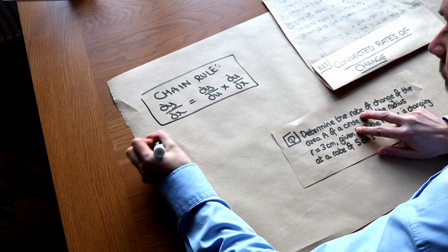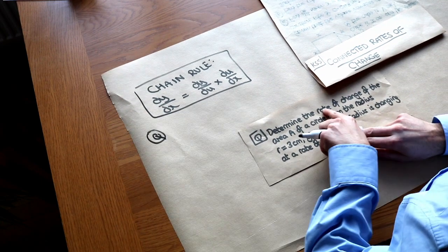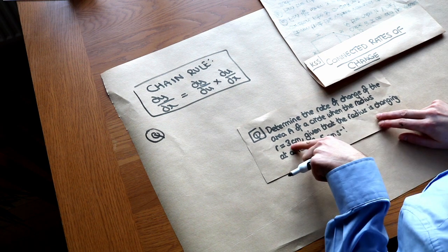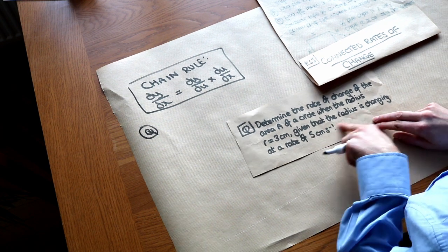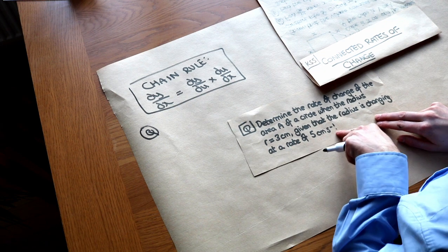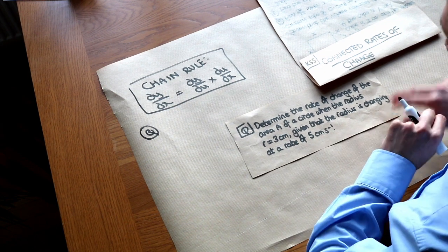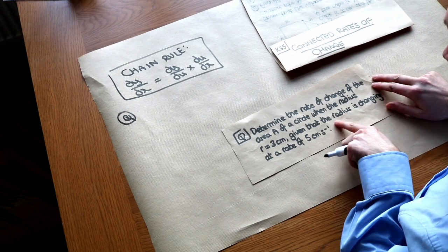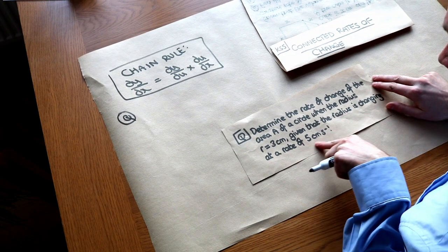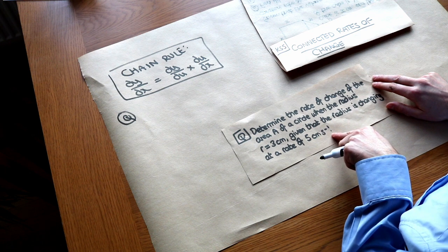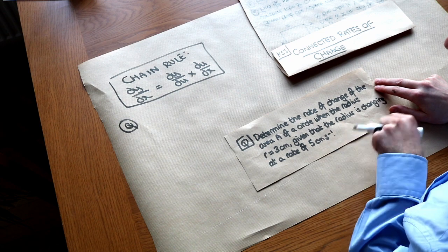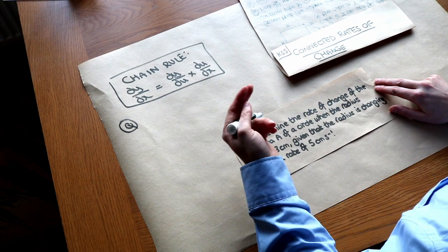Let's take this question here. Determine the rate of change of the area A of a circle when the radius R equals 3 centimeters, given that the radius is changing at a rate of 5 centimeters per second. Let's write out what information we have first. The radius is changing at a rate of 5 centimeters per second. So if the radius is R, it's the rate of change of radius with respect to time. Whenever you have a rate, it's always over dt.